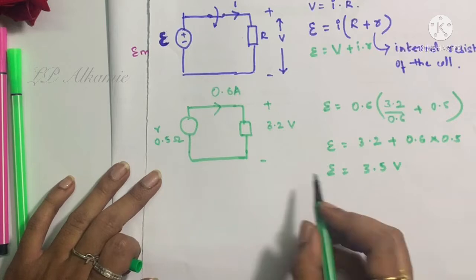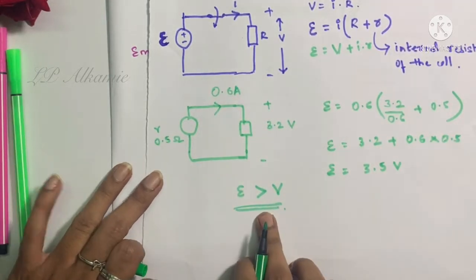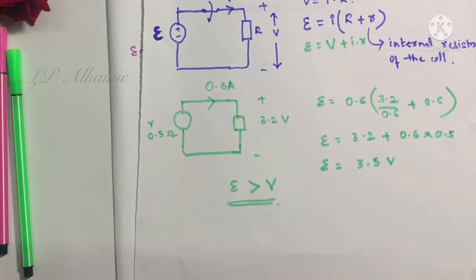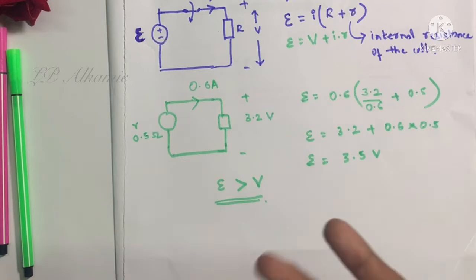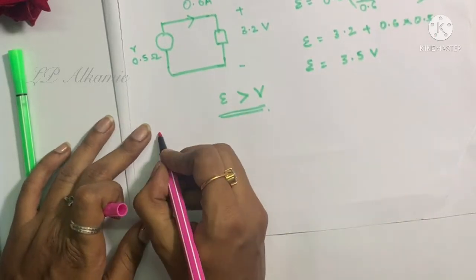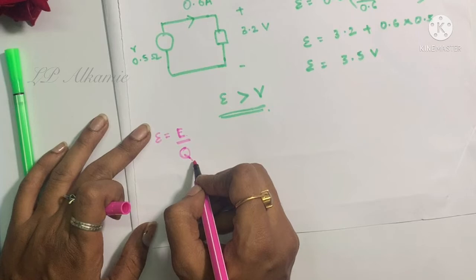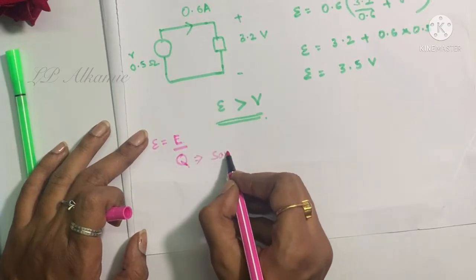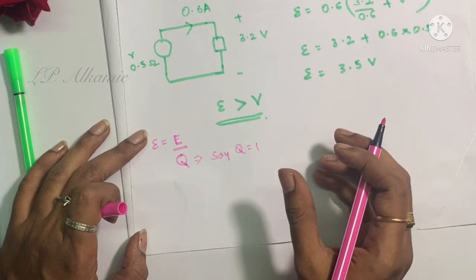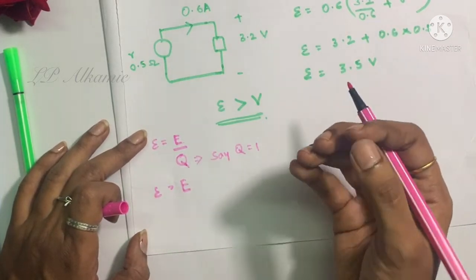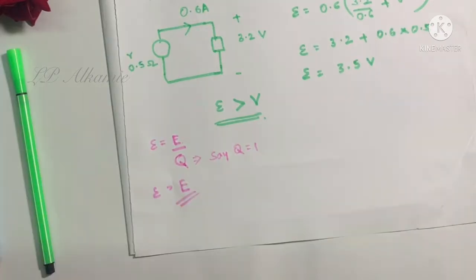So E = 3.2 + (0.6 × 0.5) = 3.2 + 0.3 = 3.5 volts. Here V is 3.2 V and E is 3.5 V, so EMF is greater than V. EMF is never equal to voltage when there is current flowing through the circuit. You can also define EMF as the amount of energy provided by the battery to each coulomb of charge passing through it, given by the formula E = Energy / Charge (E = W/Q).